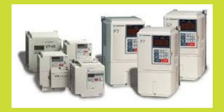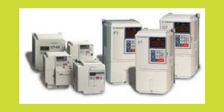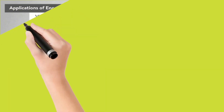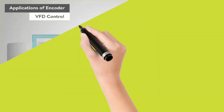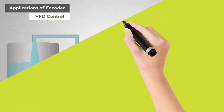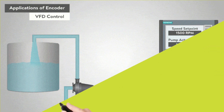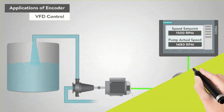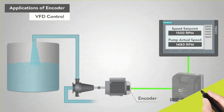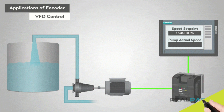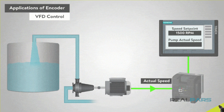Application of VFD or AC drive: variable frequency drives can be used in many areas. VFDs are widely used to control the speed of AC motors, such as conveyor systems, blower speeds, pump speeds, machine tool speeds, and other applications that require variable speeds with variable torque.